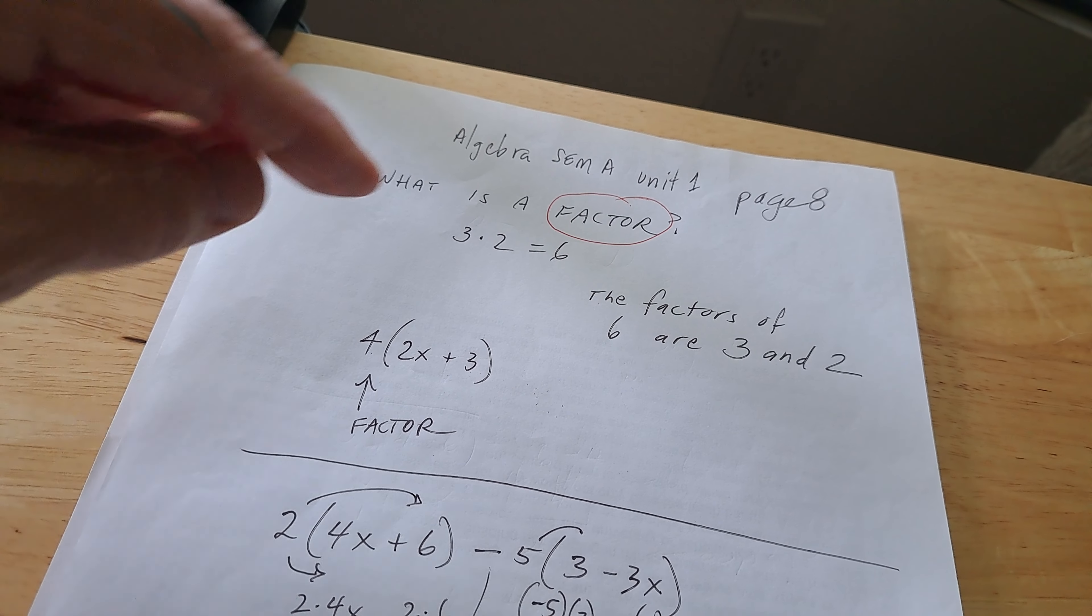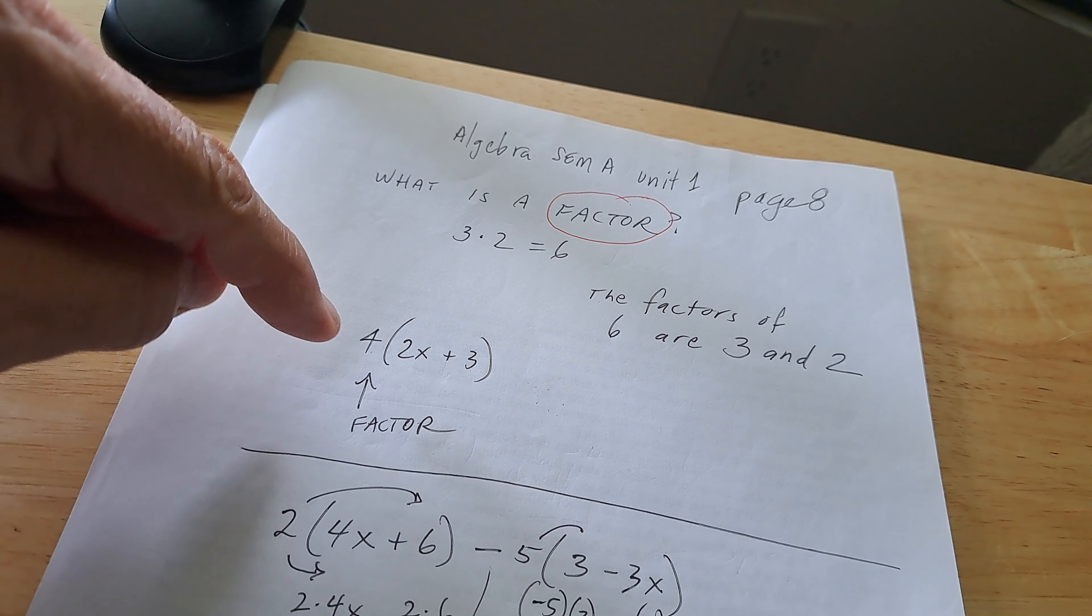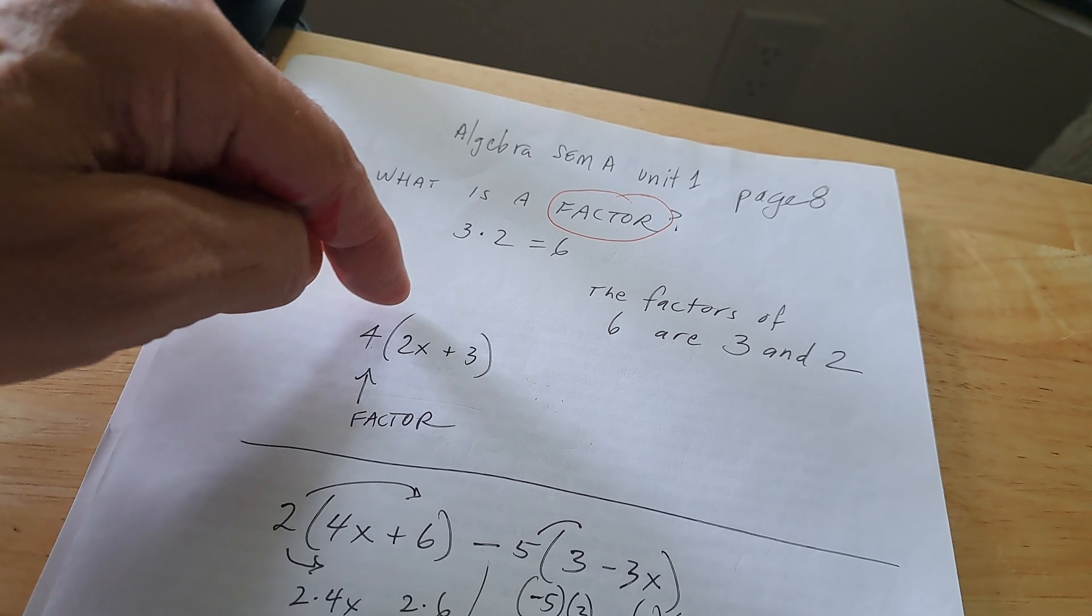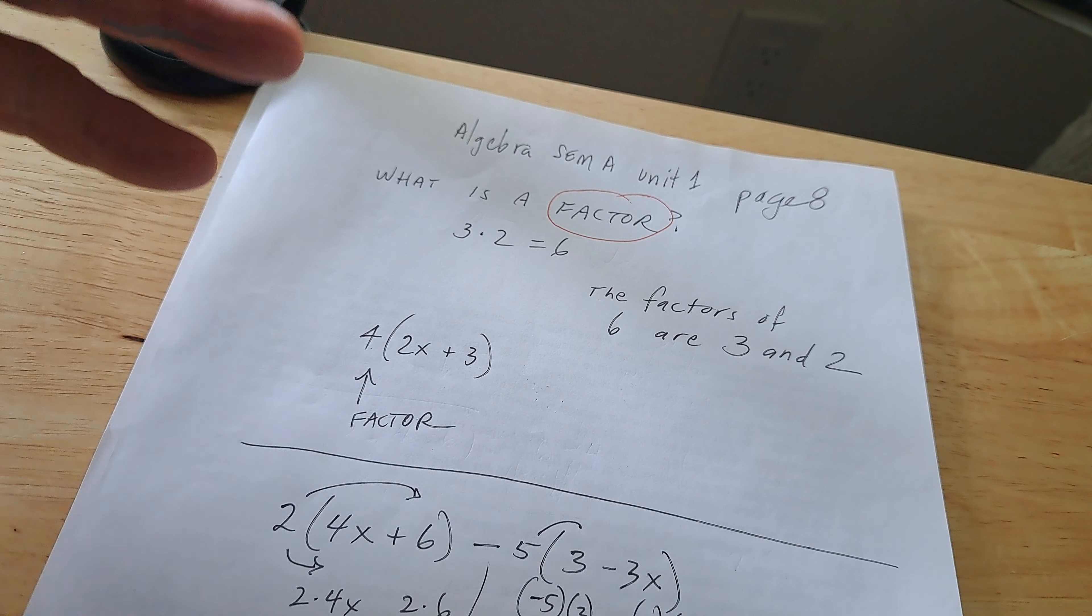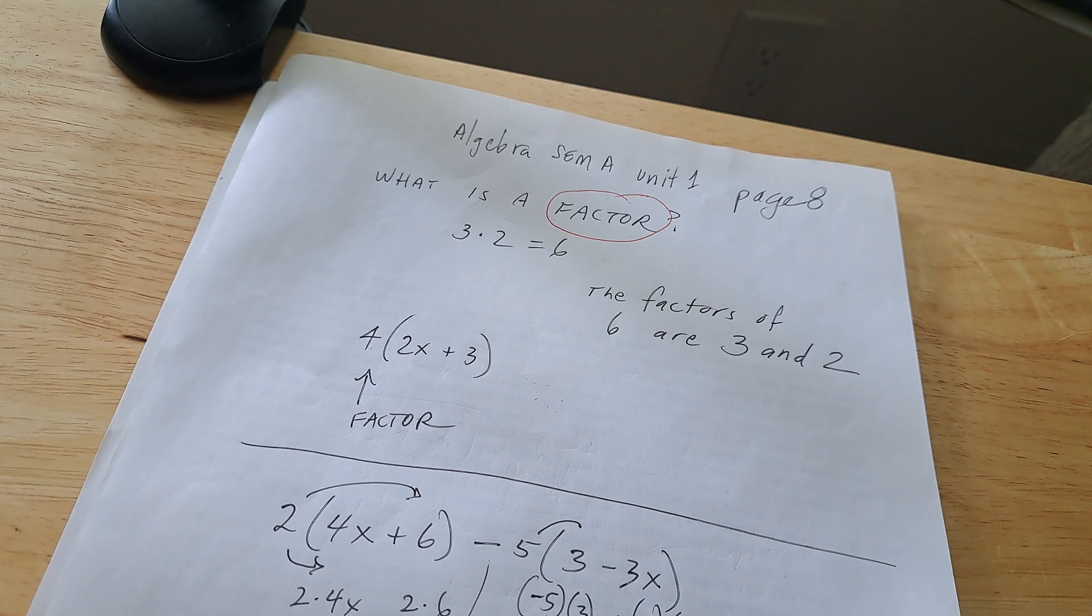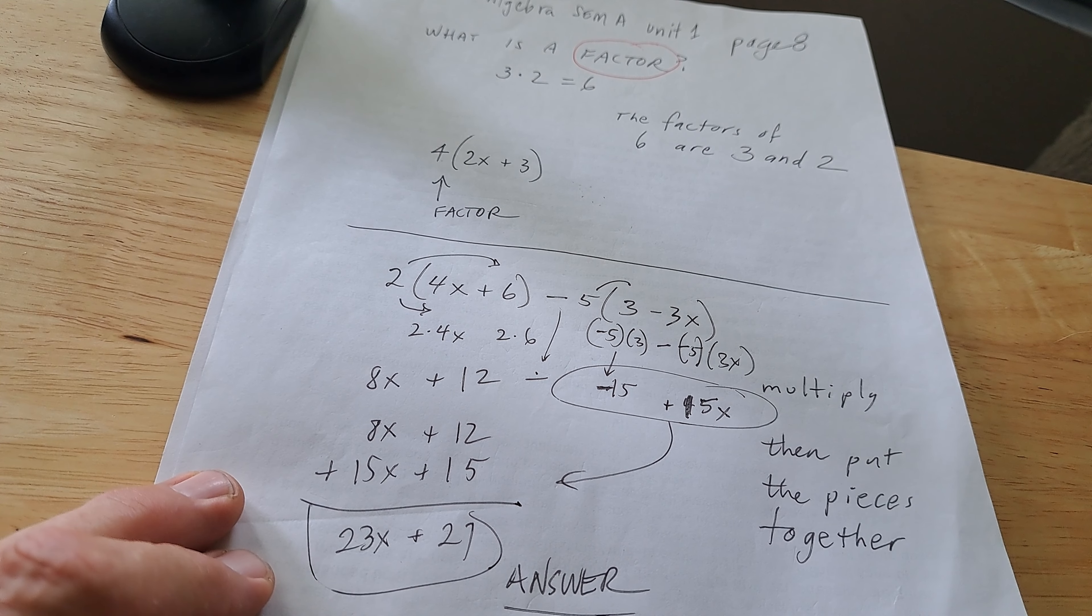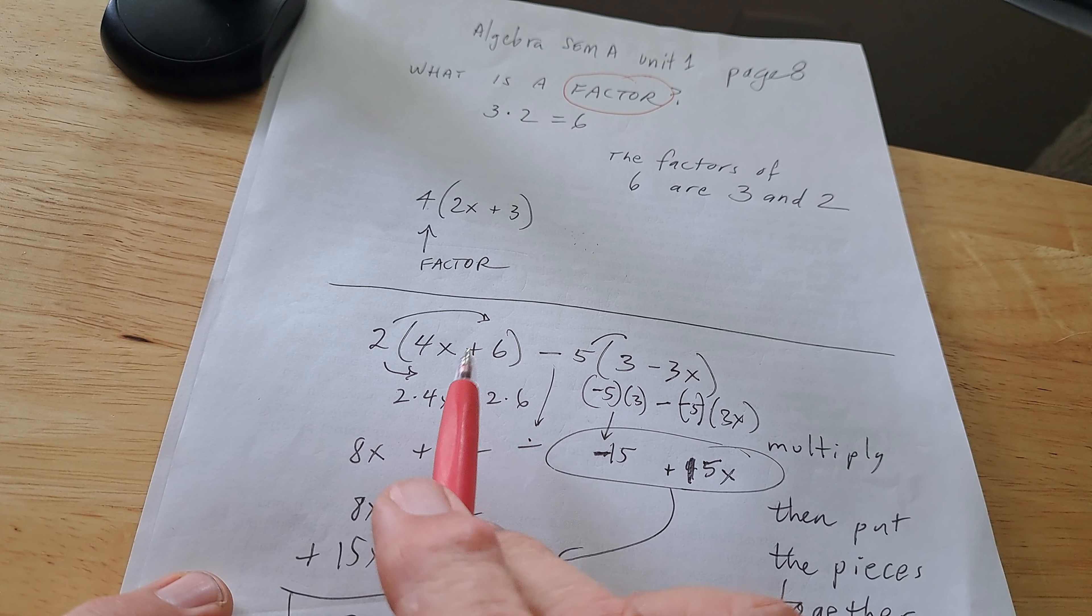They want to know what the word factor means. Factor. Well, let's put it this way. If you have three times two, those are factors. If you have four times all of this, guess what? This is a factor and all of that is a factor.